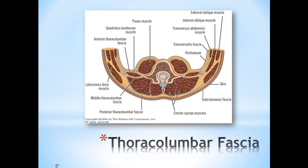I want to take a minute and talk about the thoracolumbar fascia. Sometimes we'll hear the thoracolumbar fascia referred to as the lumbodorsal fascia, and it consists of three layers of a fairly thick fascial connection. We can look at those in terms of the posterior thoracolumbar fascia, the middle thoracolumbar fascia, and the anterior thoracolumbar fascia.